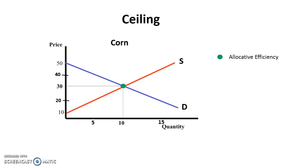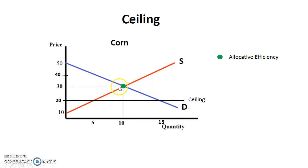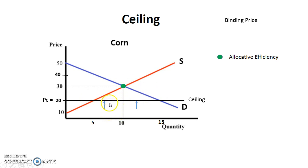When we talk about a ceiling, we're talking about where the government establishes a price control set below equilibrium. That sounds opposite of where a ceiling is located, but by definition it should make sense. So a ceiling is placed below equilibrium — in this case set at a price of $20, denoted P subscript C. This is a binding price because it is set below equilibrium, and what the government is saying is that the price cannot go above $20. You could sell it below $20, but you can't go above.